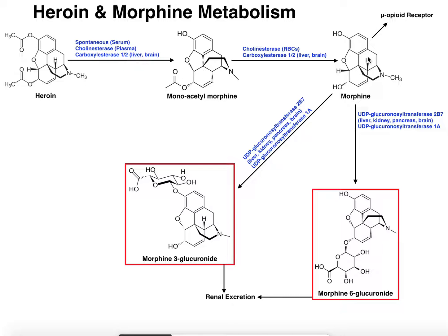Here's morphine and over here we have the chemical structure of heroin, and if you look carefully at these two molecules they look almost the same. They both have this pentacyclic structure. The only difference is that on these two hydroxyl groups of morphine you have two acetyl groups — for that reason heroin is sometimes called diacetylmorphine. These acetyl groups actually increase the half-life of the molecule because they prevent the liver from glucuronidating those two hydroxyl groups.